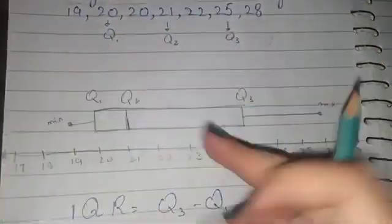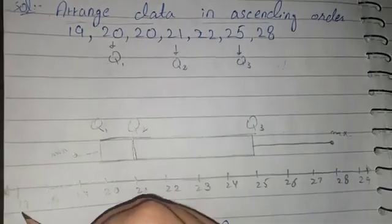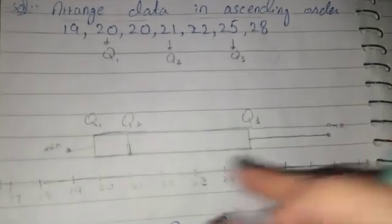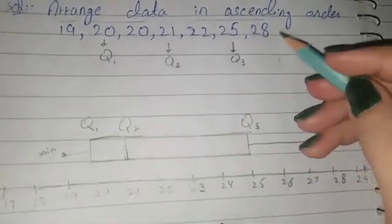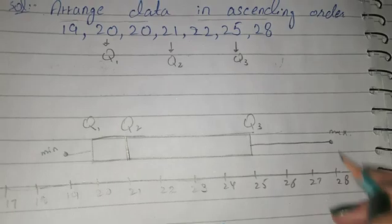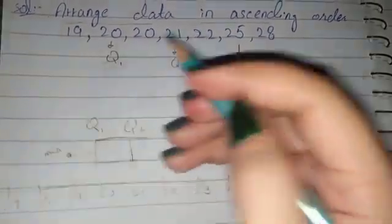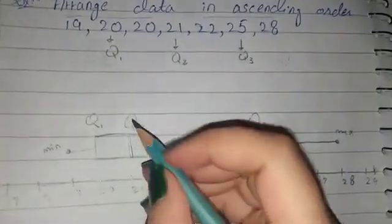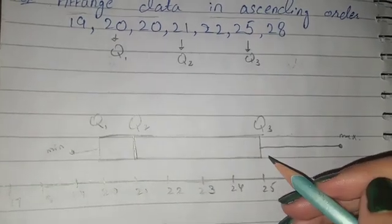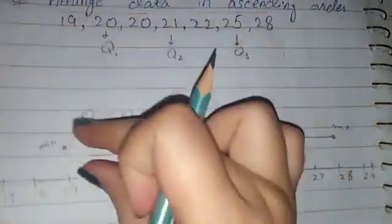Optionally, we can draw a number line starting from around 17 or 18. We mark the minimum value 19, the maximum value 28, then Q1 above 20, Q2 above 21, and Q3 above 25. This forms a box plot. The box plot is optional; the IQR calculation is compulsory.